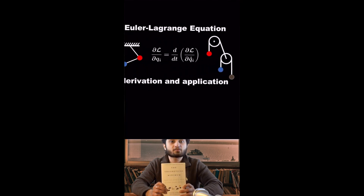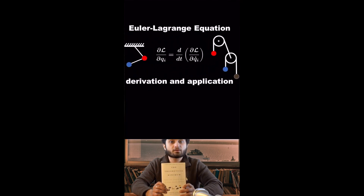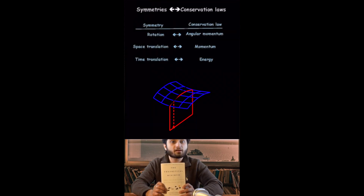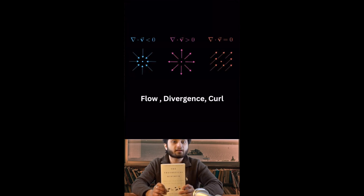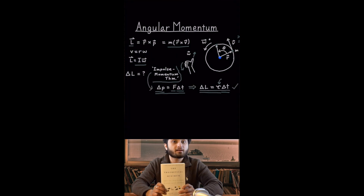This eventually brings us to the Euler-Lagrange equation, which is a great segue into symmetries and conservation laws. Symmetries are crucial to the understanding of fundamental physics, and the book gives us a good understanding of Lagrangian and Hamiltonian mechanics. Then the book wraps up with a few final chapters on more advanced calculus ideas like flow and divergence, as well as angular momentum and an introduction to electromagnetism.